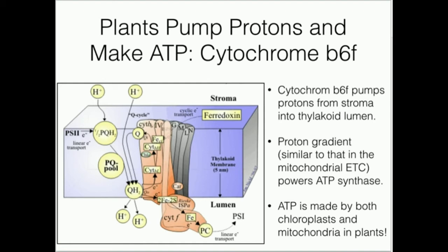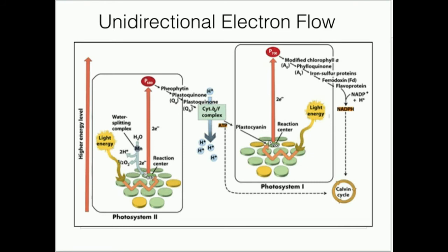If you want more detail on ATP synthase, there is a whole video on that. A key point that most people forget: ATP is made by both chloroplasts and mitochondria in plants. The ATP produced here is ultimately made by ATP synthase, but it's powered by the cytochrome B6F complex. ATP is one of the first important products we get from the photosystems — particularly from photosystem II.